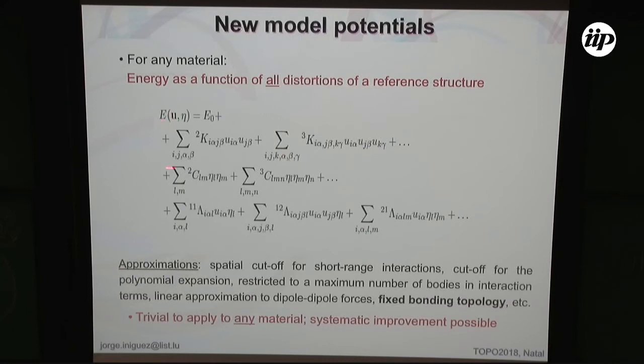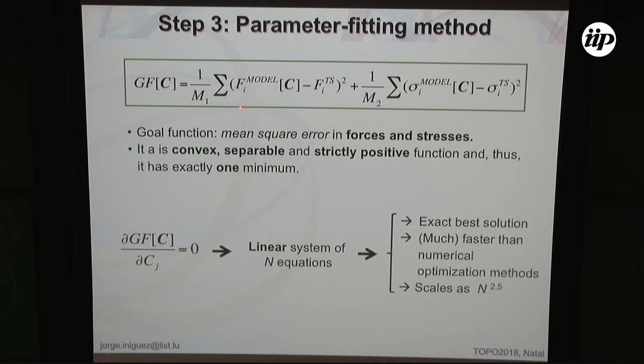Our models have a very important advantage: they are polynomial, and the energy is linear in all the parameters to fit. Therefore I can formulate the fitting problem by defining a goal function to minimize — a sum over configurations in the molecular dynamics trajectory, comparing forces given by the model for a given parameter set with the forces from DFT. I want to minimize the difference between these forces. Since the forces are linear in the parameters, this is a quadratic form — like a parabola in many dimensions.